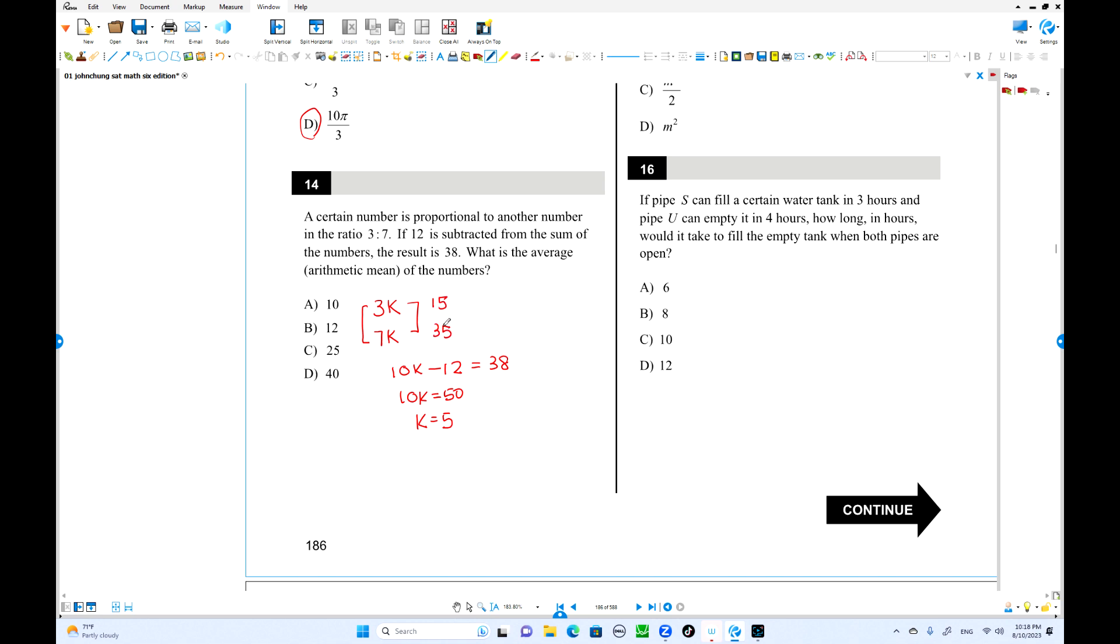But we are not done. What is the average of the numbers? 15 plus 35 is 50, and divide by 2. This is the average. 25 is the answer.